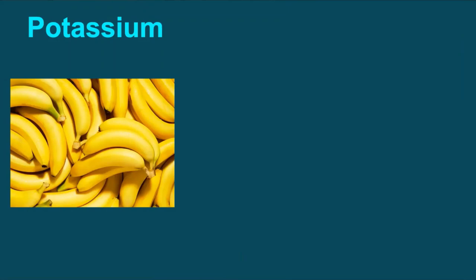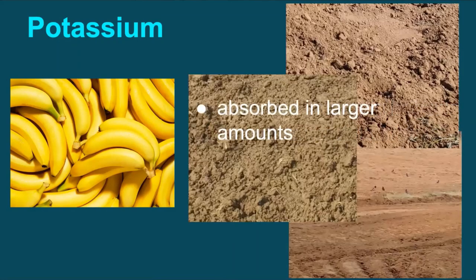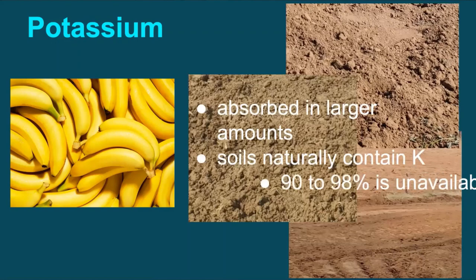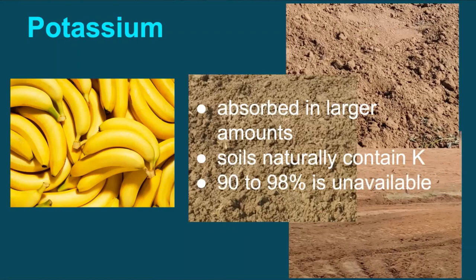Now the next biofertilizer is potassium. As you know, potassium is considered as an essential nutrient and a major constituent within all living cells. Therefore, next to nitrogen, potassium is absorbed in larger amounts by plant than any other element. It will be interesting to know that most of the soils naturally contain potassium in larger amounts than any other nutrients, but its availability is restricted as it occurs mostly in insoluble form.